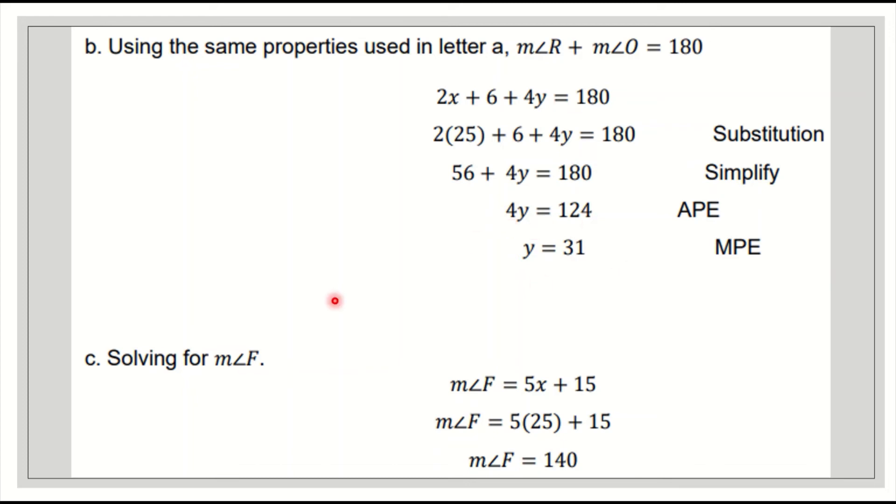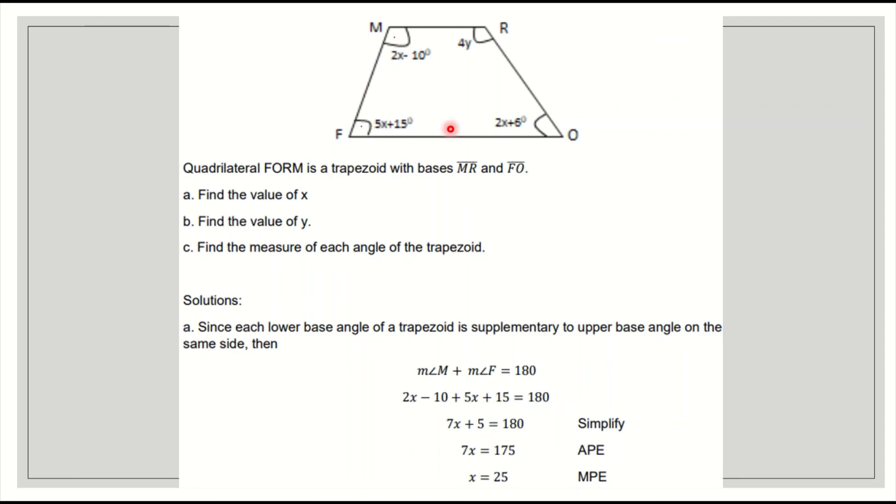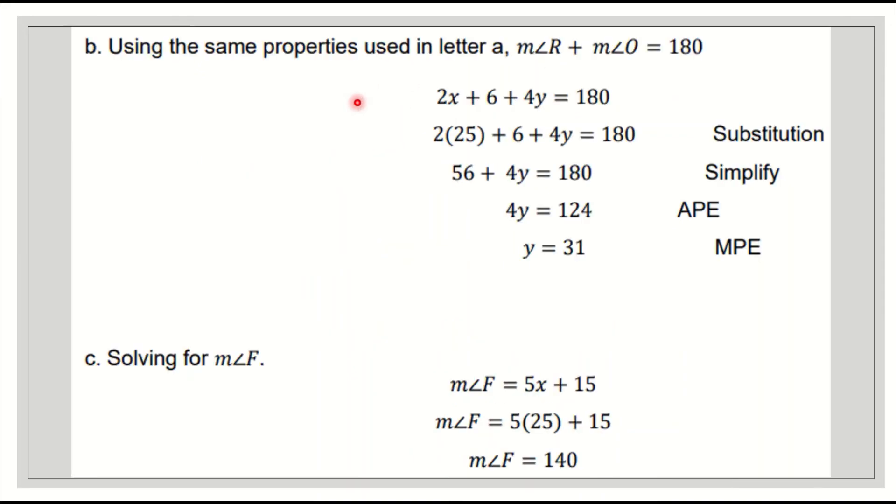Solving for the measure of angle F. Angle F is equal to 5x plus 15. So the measure of angle F is equal to 5 times 25 plus 15, which equals 140. Therefore, the measure of angle F is 140.